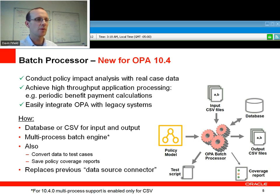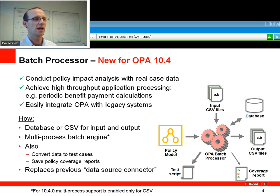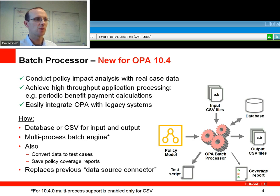or if you have an existing data warehouse full of information from somewhere else, you can take your policy models and run them using the batch processor against that data, augment that information in your data warehouse, and use your regular BI tools to slice and dice the results. It can also be used for batch payment processing and anywhere where you want high volume throughput. It's a very powerful new capability.